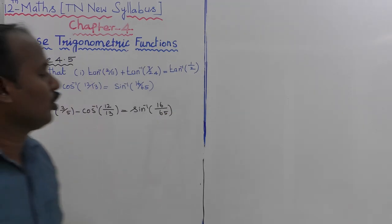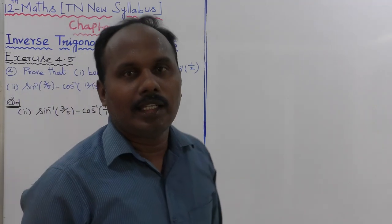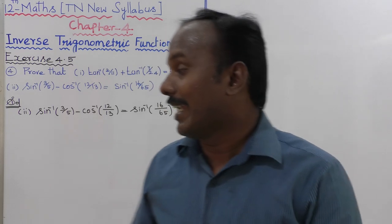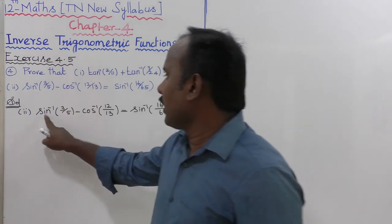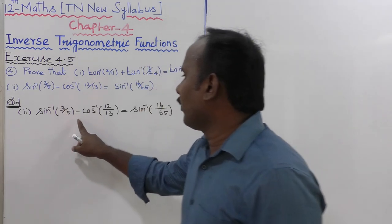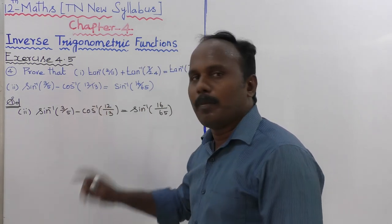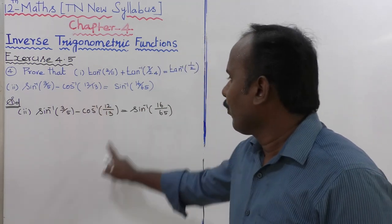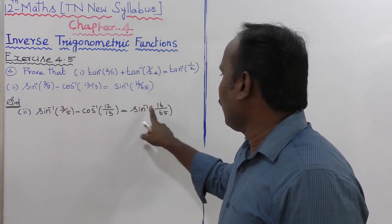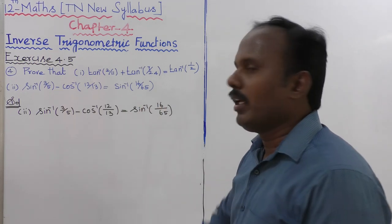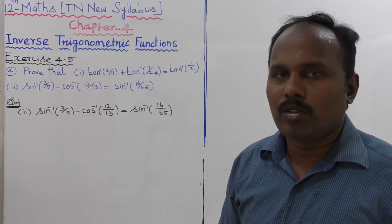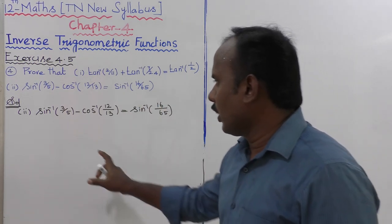Fourth sum: prove that sin inverse of 3 by 5 minus cos inverse of 12 by 13 is equal to sin inverse of 16 by 65. Very easy, this one.